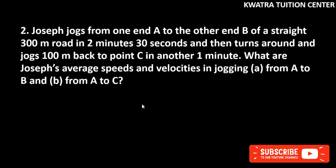Let's start with question number two. It says Joseph jogs from one end A to the other end B of a straight 300 meter road in 2 minutes 30 seconds, then turns around and jogs 100 meter back to point C in another one minute.